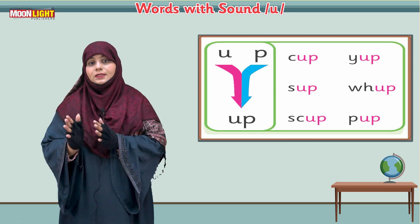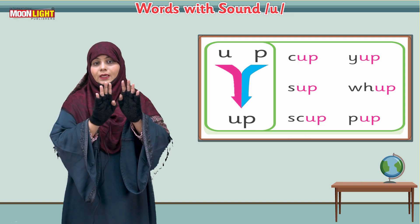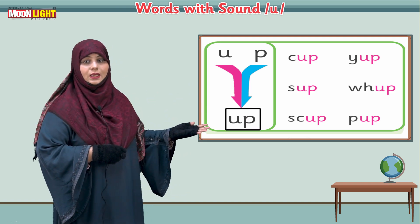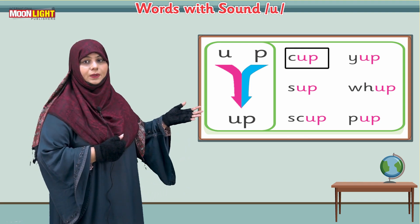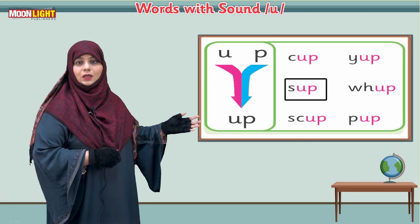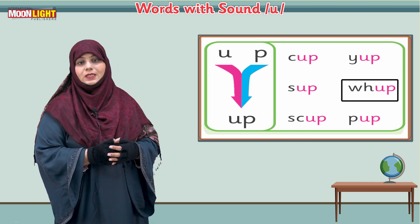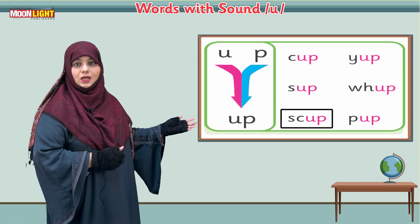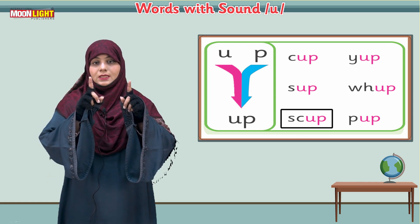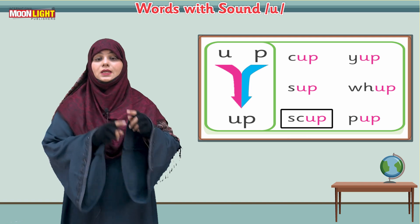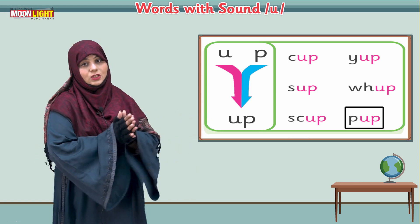Now we are going to join the letter U with another sound — P says 'up.' When we join U with P, it will be 'up.' Now read with me: c-up cup, p-up pup, w-up wup. You can see here W makes a 'w' sound. Then: sk-up skup — when we join S with K, it makes the 'sk' blend, and sk-up gives us 'skup.'